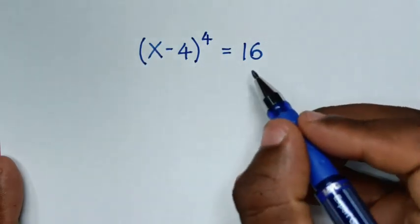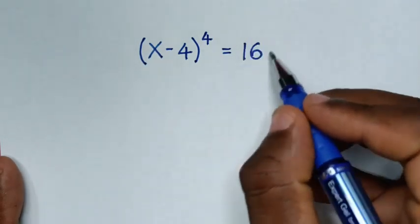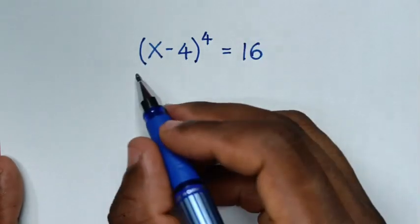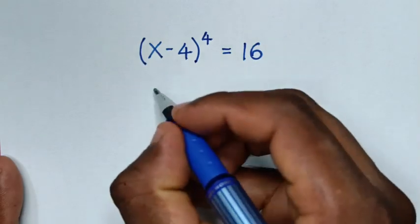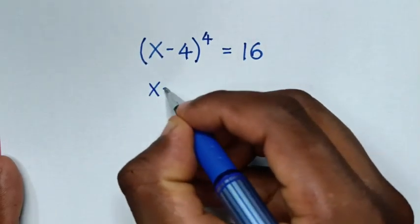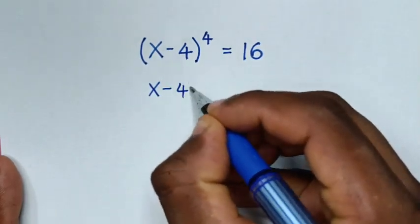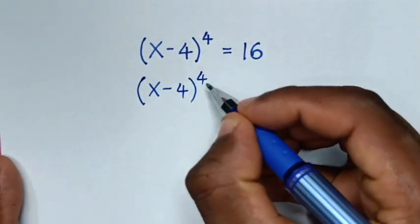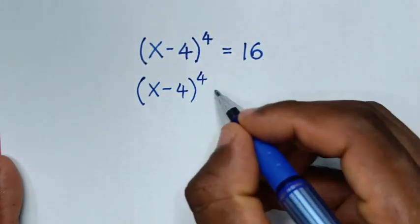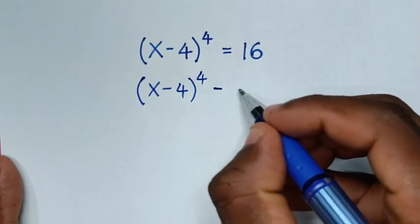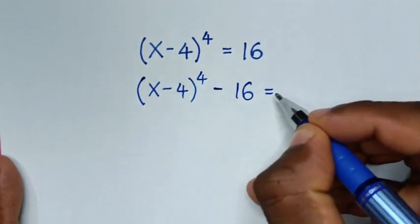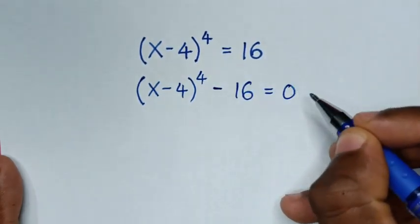In the first step, we'll take this 16 to the left side. So it will be (x minus 4) bracket to the power 4, and 16 taken to this side will be minus 16, is equal to 0.